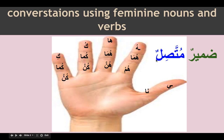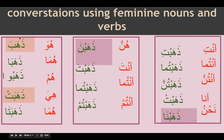Then we have damirun muttasilun — attached pronouns. These are pronouns which attach themselves to either a noun, a harf, a zarf, or a verb. When they are attached to a noun, harf, or zarf, they are majroor. When attached to a verb, they are mansoob. The forms are: hu, huma, hum, ha, huma, hunna, ka, kuma, kum, ki, kuma, kunna, i, na.